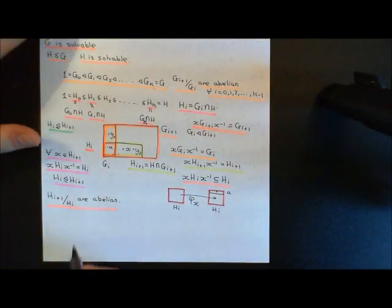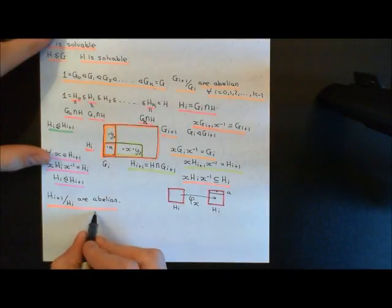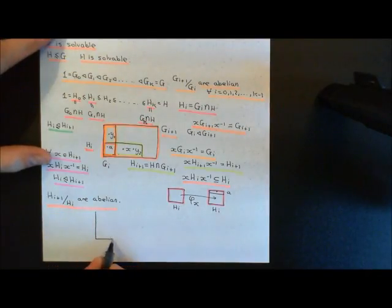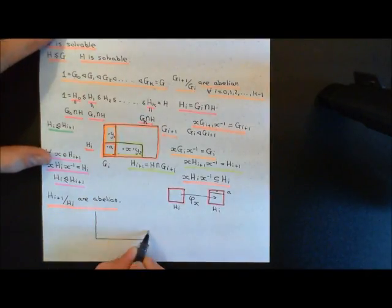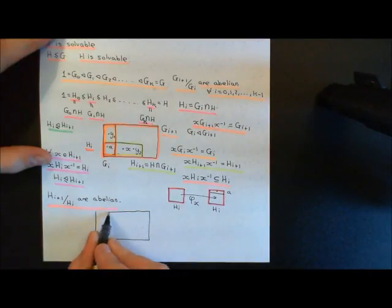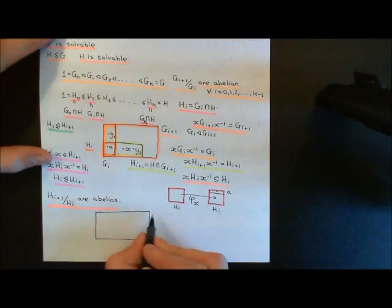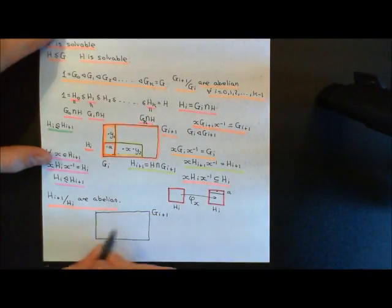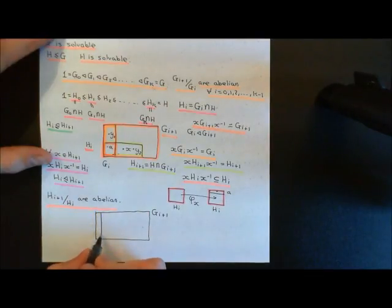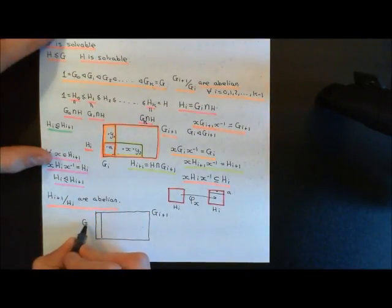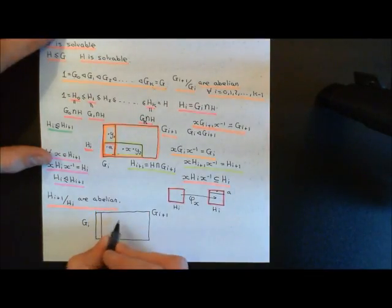First, let me draw a picture to explain intuitively why this is true. It's going to be the same picture as we had before with an added detail. Here is G_{i+1} and I've got G_i inside of it, so this subportion is G_i.